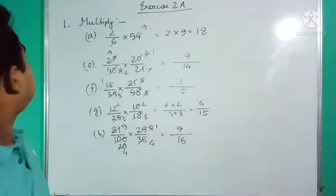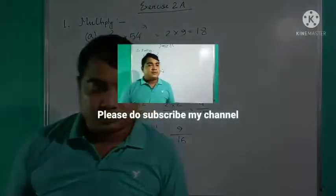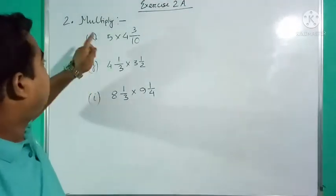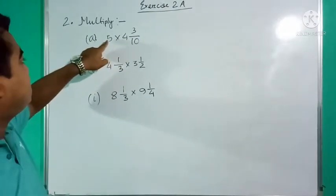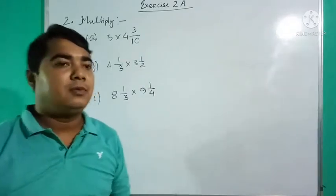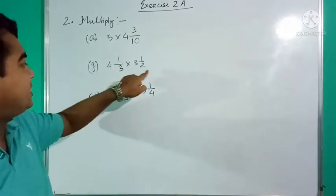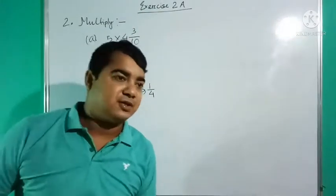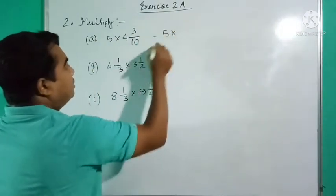These are the solutions for question 1. Next, proceed to question number 2. Question 2 also says multiply the fractions, but here one is a whole number and the other is a mixed fraction, or both are mixed fractions. The process: first convert mixed fractions to improper fractions, then multiply.